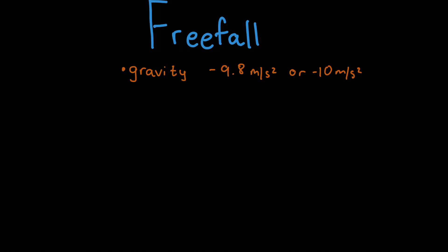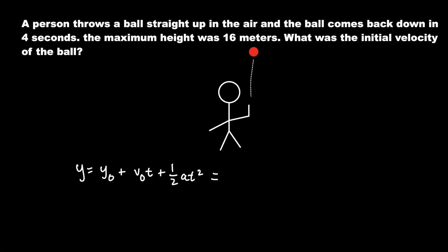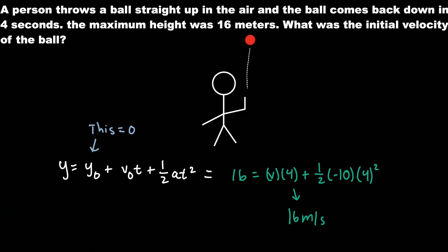Now let's discuss freefall — when an object experiences motion due to Earth's gravity. Gravity is a motion downward toward the center of Earth with a magnitude of negative 9.8 m/s² (or negative 10 m/s² if rounded). The negative is because gravity points downward and up is positive, down is negative. For a freefall problem: a person throws a ball straight up and it comes back down in four seconds with a maximum height of 60 meters — what was the initial velocity? Using the kinematic formula, plugging in our numbers gives us 16 meters per second as the initial velocity. As long as you use the big five equations with acceleration as gravity, freefall questions will be the easiest part of kinematics.